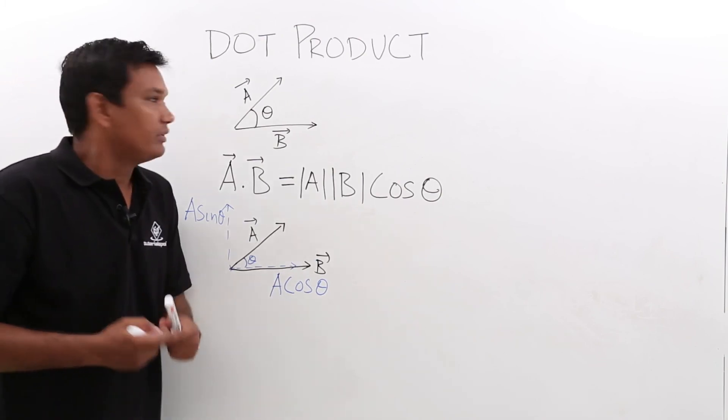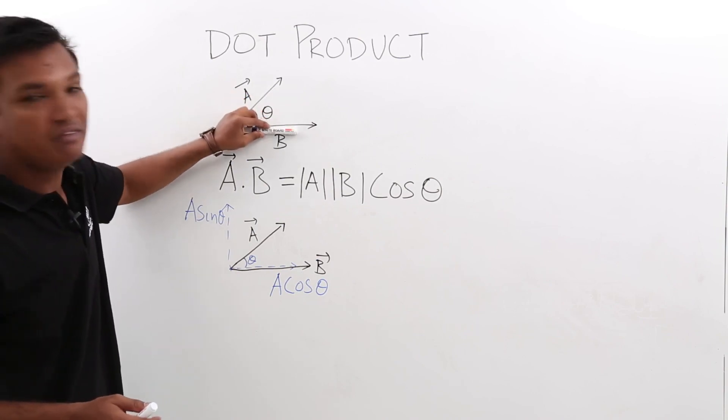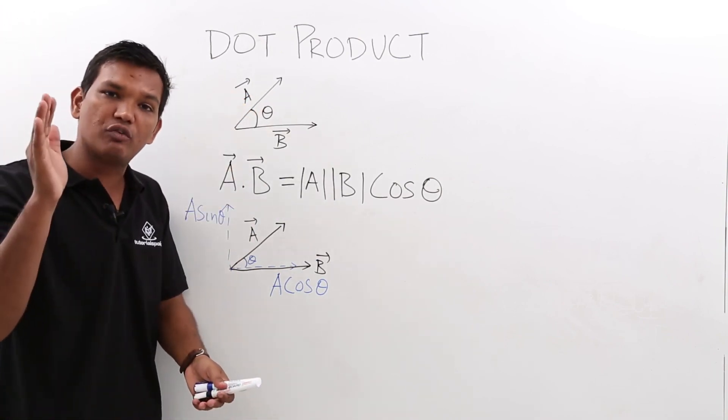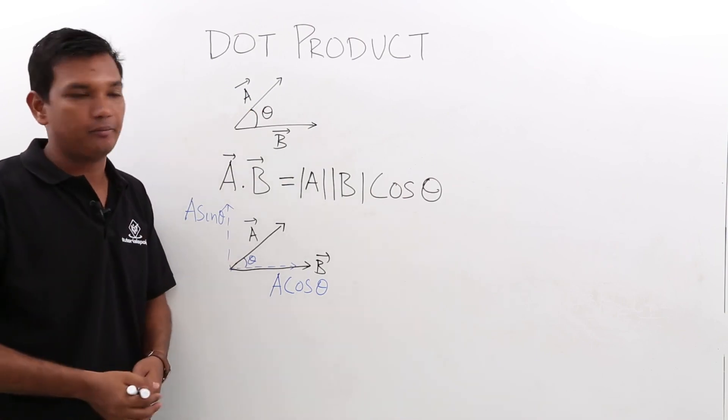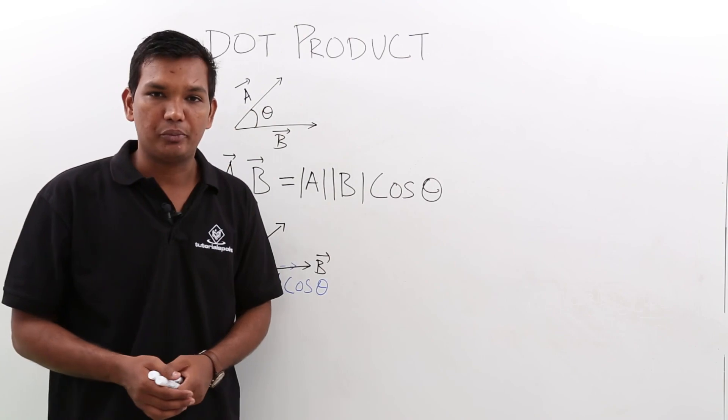So actually, it is nothing but the projection of A vector over the B vector. So dot product is nothing but the projection of one vector over the another vector. In the next lectures, we will see the examples of dot product. Thank you.